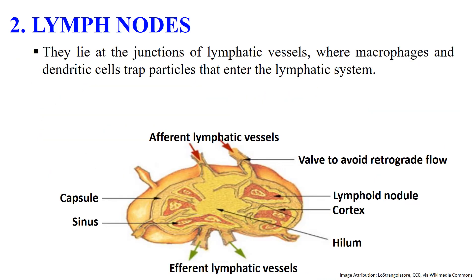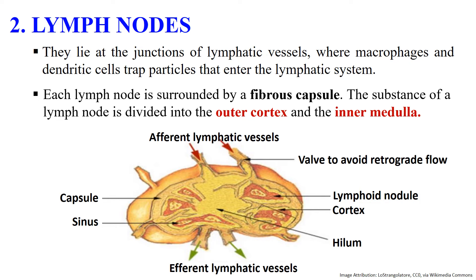Next are the lymph nodes. Lymph nodes are present throughout the body and generally lie at the junction of lymphatic vessels, where macrophages and dendritic cells entrap antigens that enter the lymphatic system. They are kidney or oval in shape. Each lymph node is surrounded by a fibrous capsule which extends inside to form trabeculae. The substance of the lymph node is divided into an outer cortex and an inner medulla. The hilum is the indent on the concave surface of the lymph node where lymphatic vessels and blood vessels enter and leave.